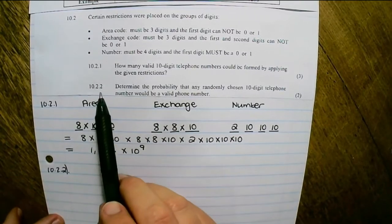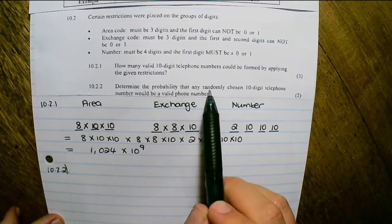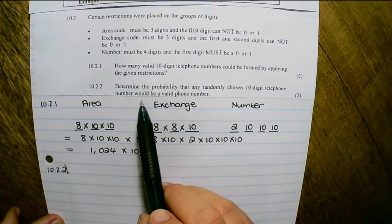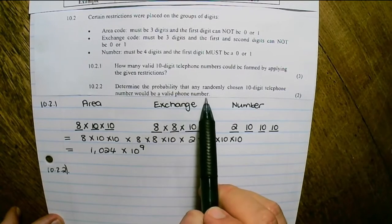The next question reads: determine the probability that any randomly chosen 10-digit telephone number will be a valid telephone number.